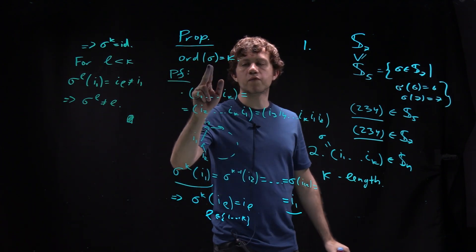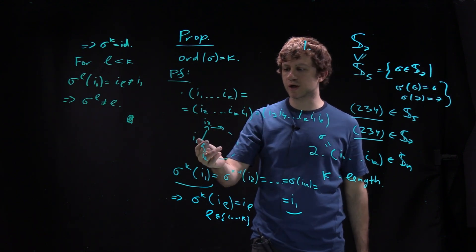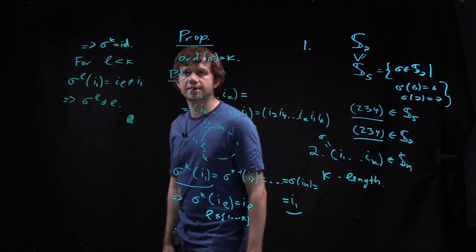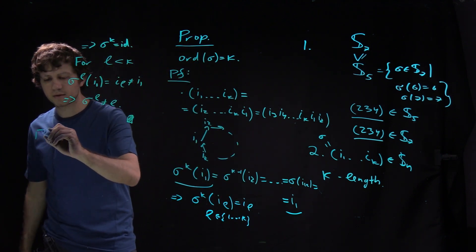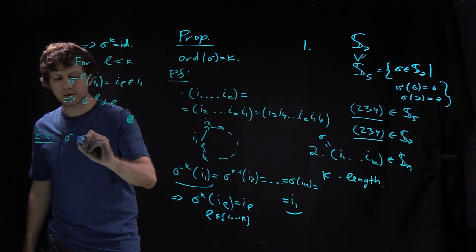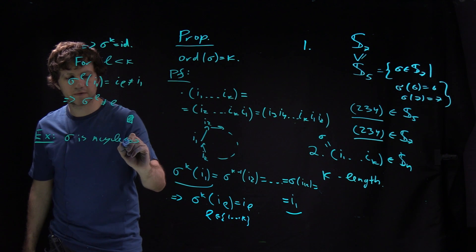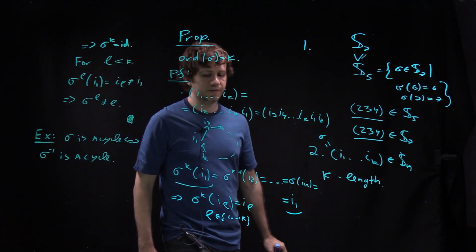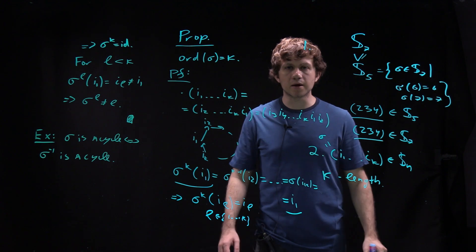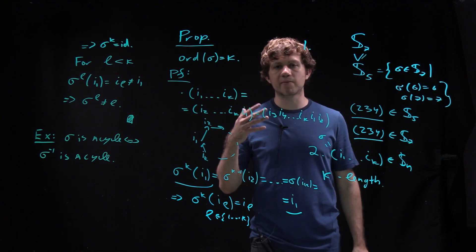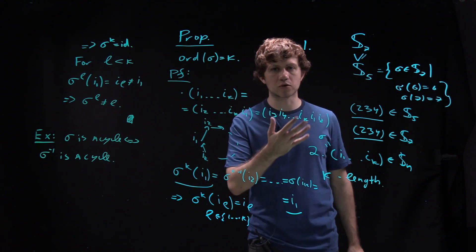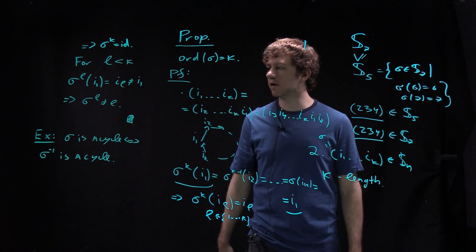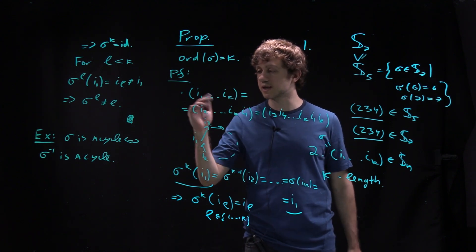It's also worth noting that the inverse of a cycle is a cycle of the same order — a useful little exercise. In the next lecture, I want to talk about how to generate Sn, meaning how to present every element as a product of something simpler — in particular, as a product of transpositions, which are cycles of length 2.